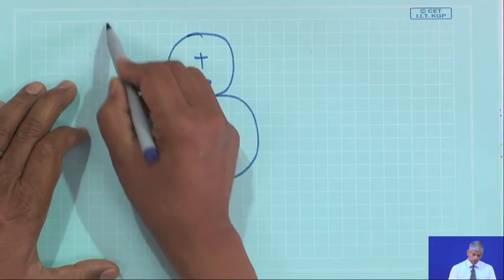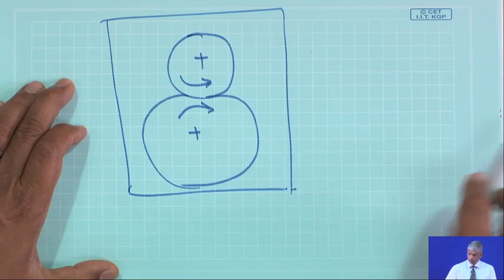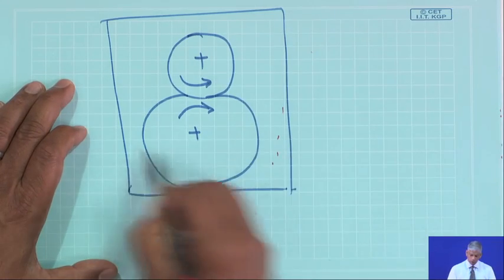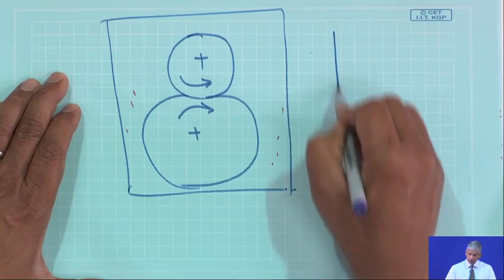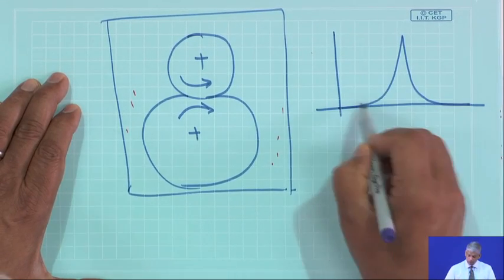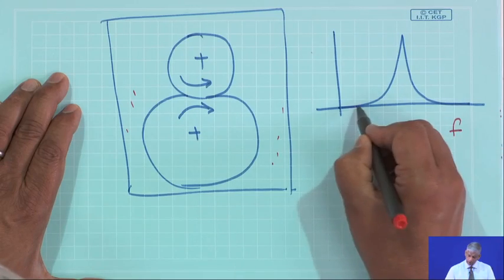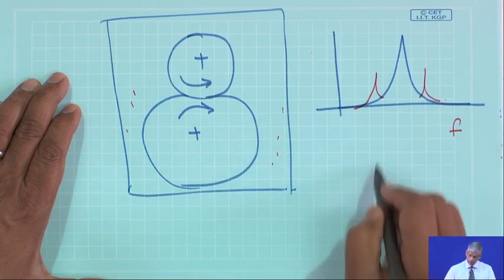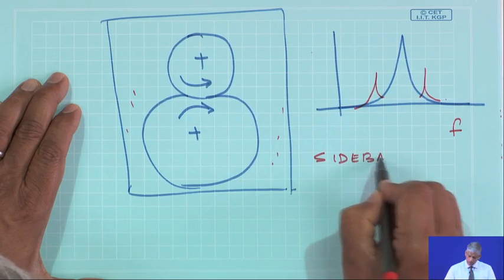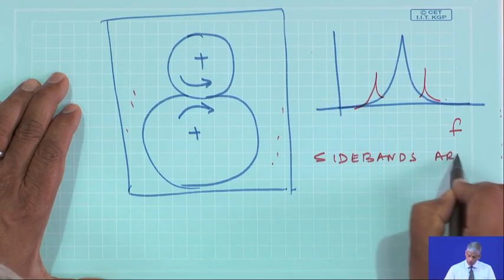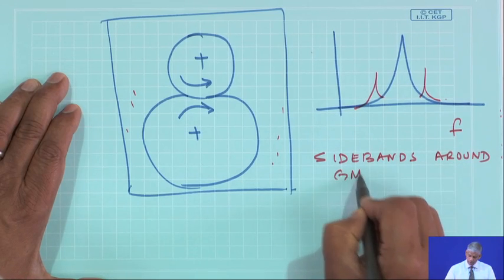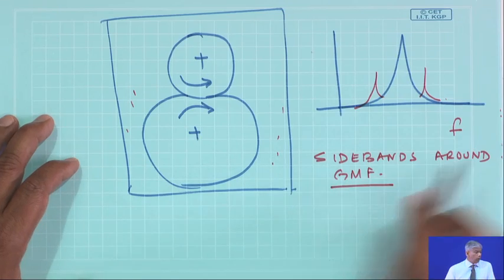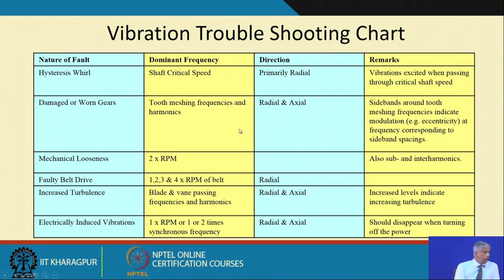We will come across many gears in gearboxes. Very importantly, I will see gear mesh frequency (GMF) in the frequency domain, and then side bands. Side bands around GMF indicate modulation, and usually these are radial vibrations. Side bands around tooth mesh frequency indicate modulation and eccentricity at frequency corresponding to side band spacings.